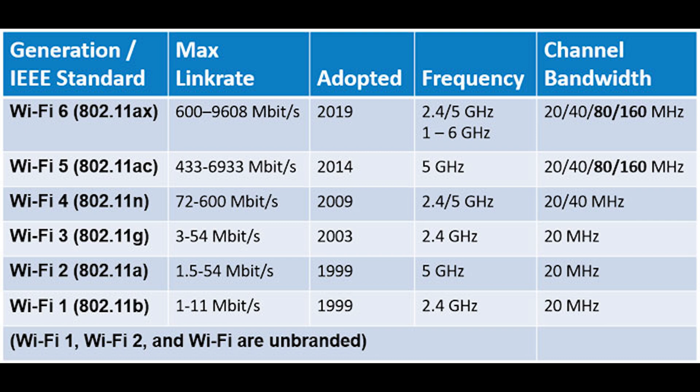The 802.11a standard specifies radio frequencies between 5.15 and 5.875 gigahertz. In contrast, 802.11b and 802.11g standards operate in the 2.4 to 2.497 gigahertz range. 802.11n, known as Wi-Fi 4, can operate in either the 2.4 gigahertz or 5 gigahertz ranges.